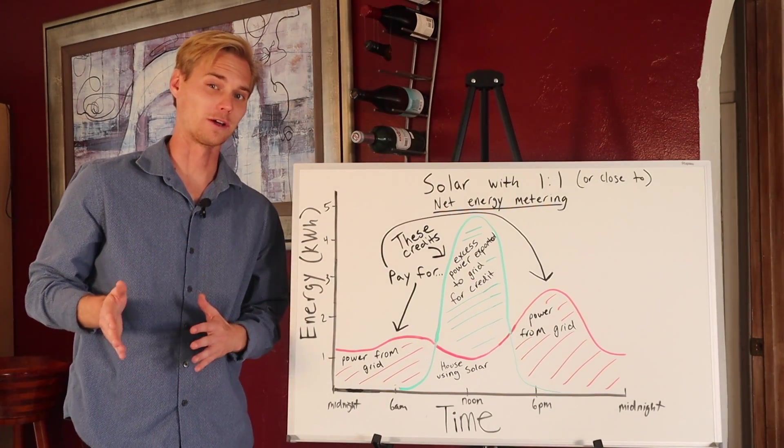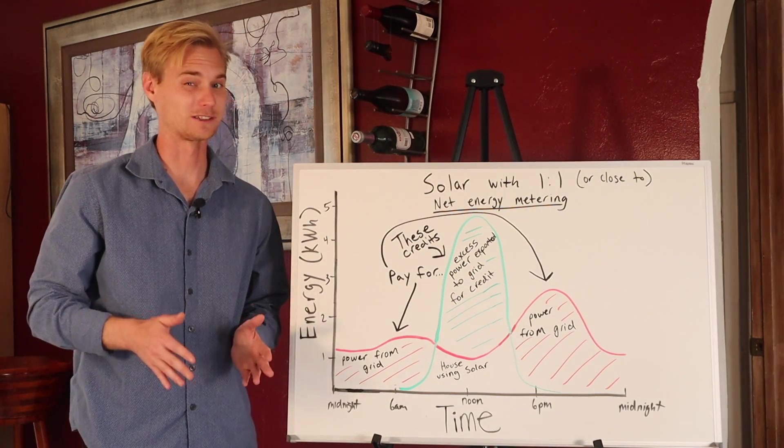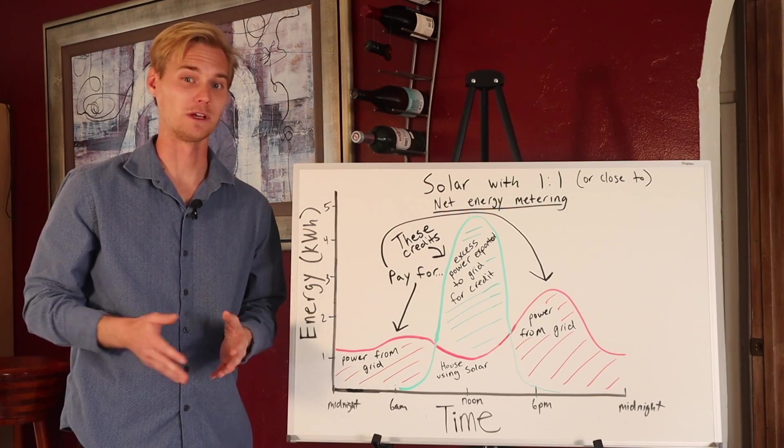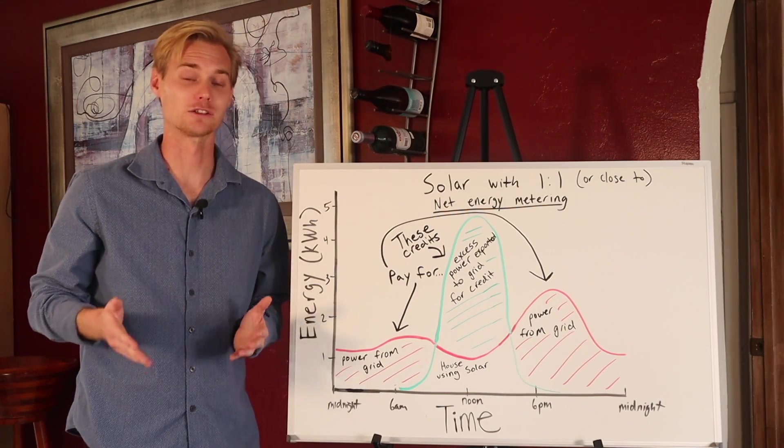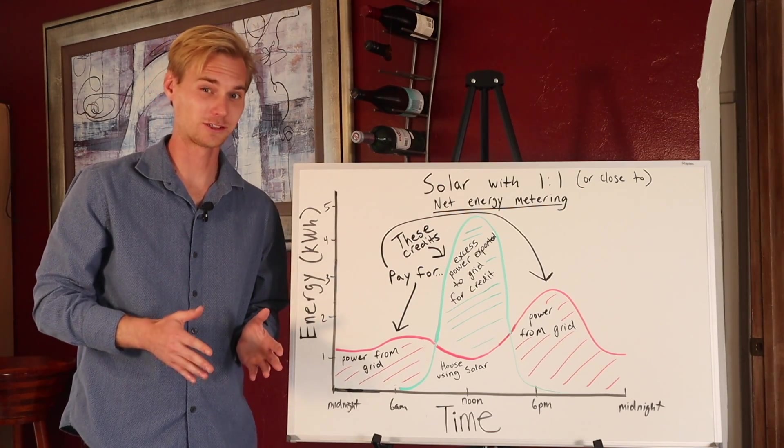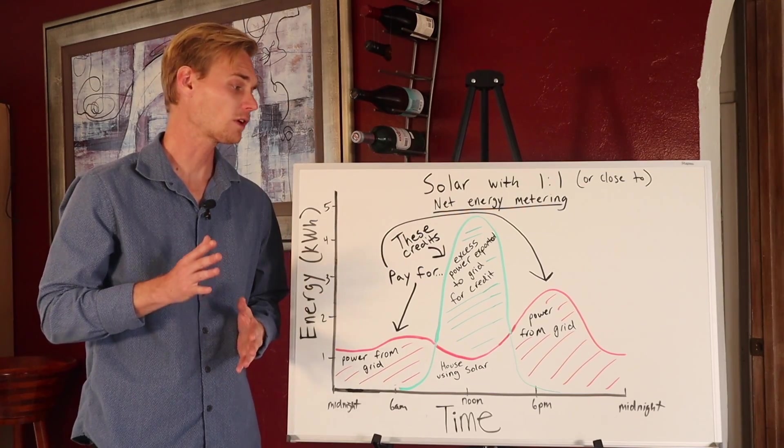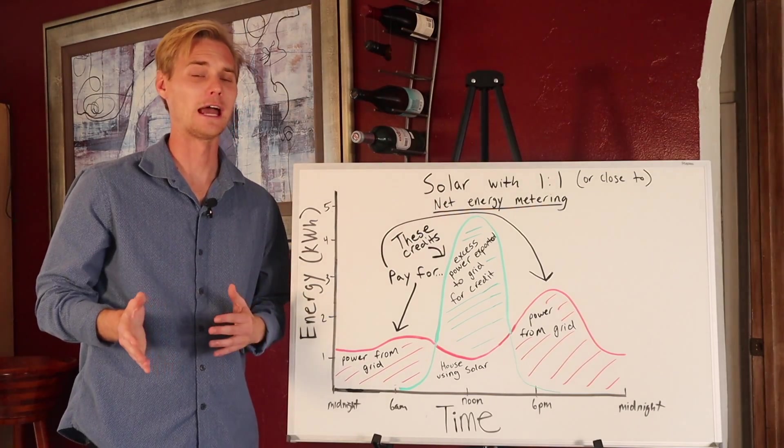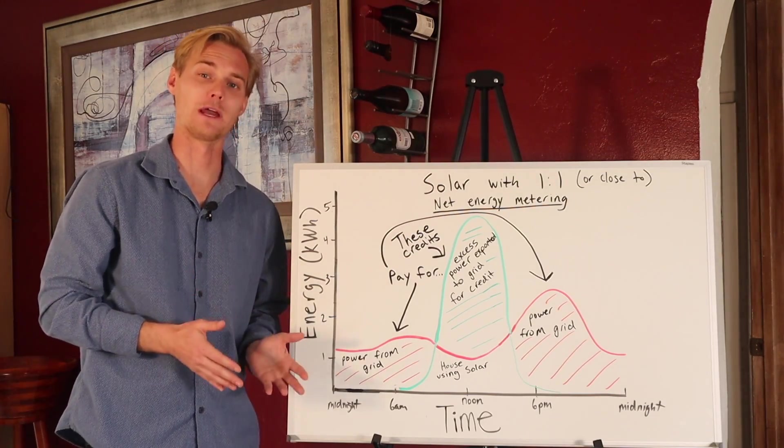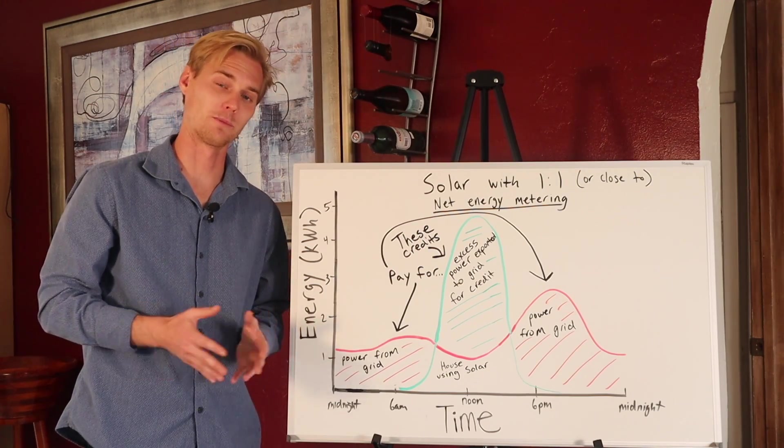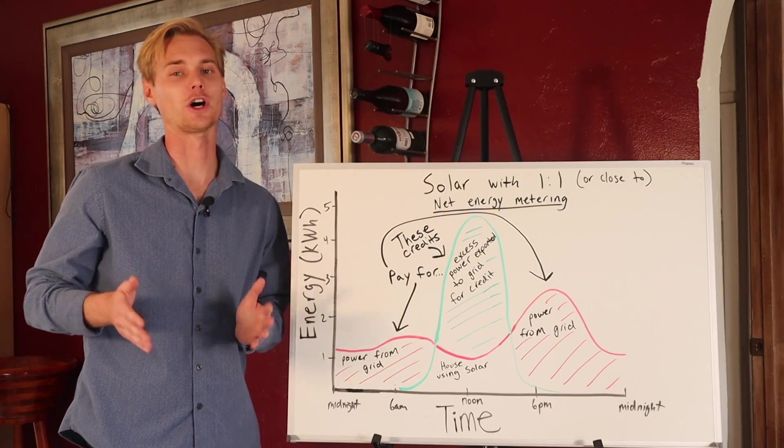Now, there are a lot of markets with utility companies that don't exactly offer very good net metering. California being 50% of the nation's solar market, and they just pretty much slashed the net metering incentives. Now, net metering isn't everything. A good net metering program will help the payback period go down, but in California, for example, it still makes sense. It's just not as good.